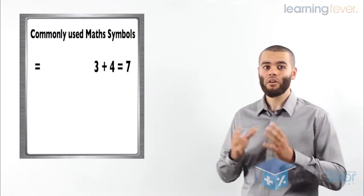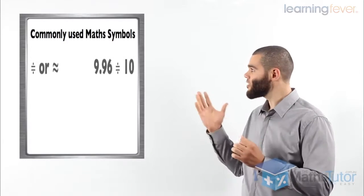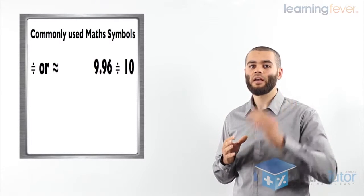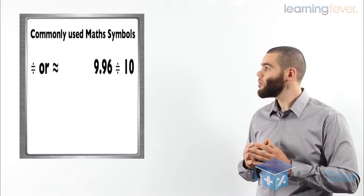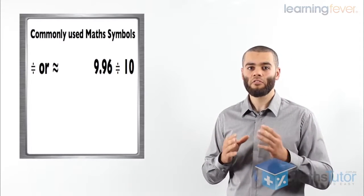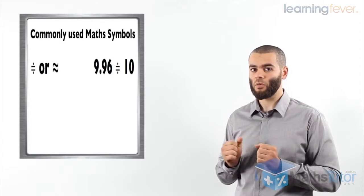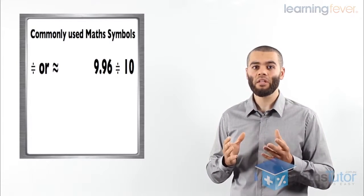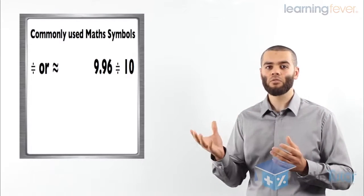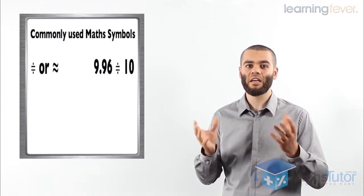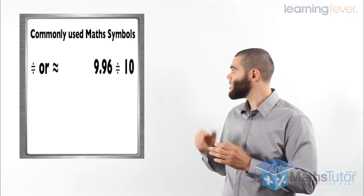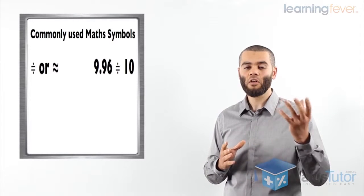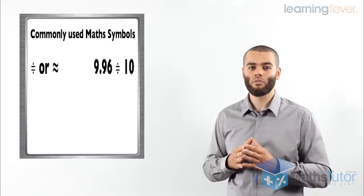Let's move on to something similar, but not exactly the same. This symbol looks like an equal sign, but it has a dot on top and a dot in the middle, or we have a squiggly line meaning the same thing. This is the approximately equal to symbol, which means something is approximately equal to another value, but not exactly the same. For example, 9.96 is approximately equal to 10 — it's close enough.